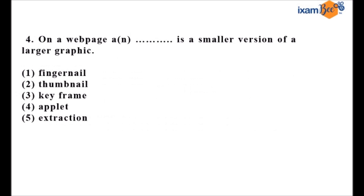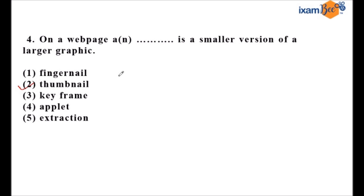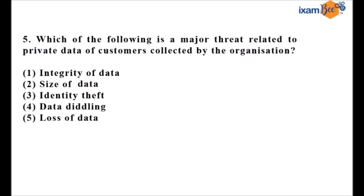Question four says: on a web page, a dash is a smaller version of a larger graphic. The answer is a thumbnail. Before clicking on a video, you see a small image in the list of videos — that is the thumbnail of the YouTube video.